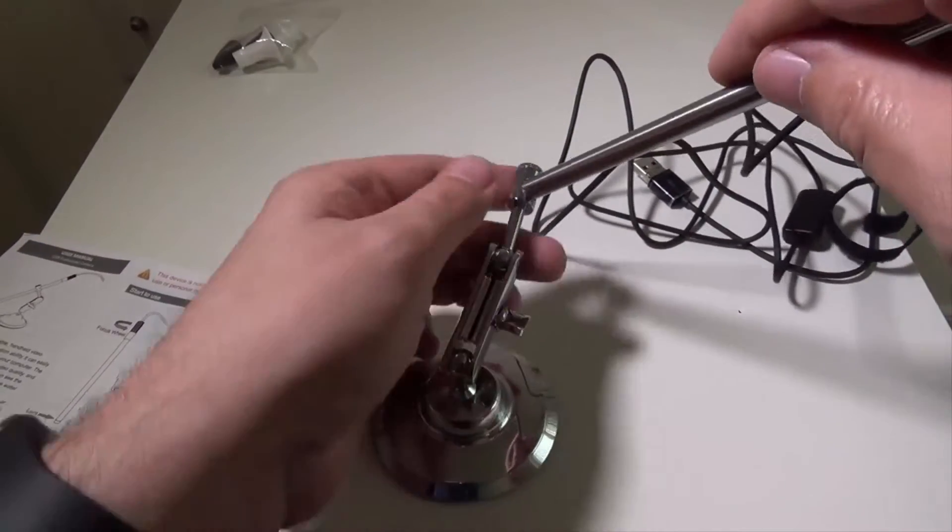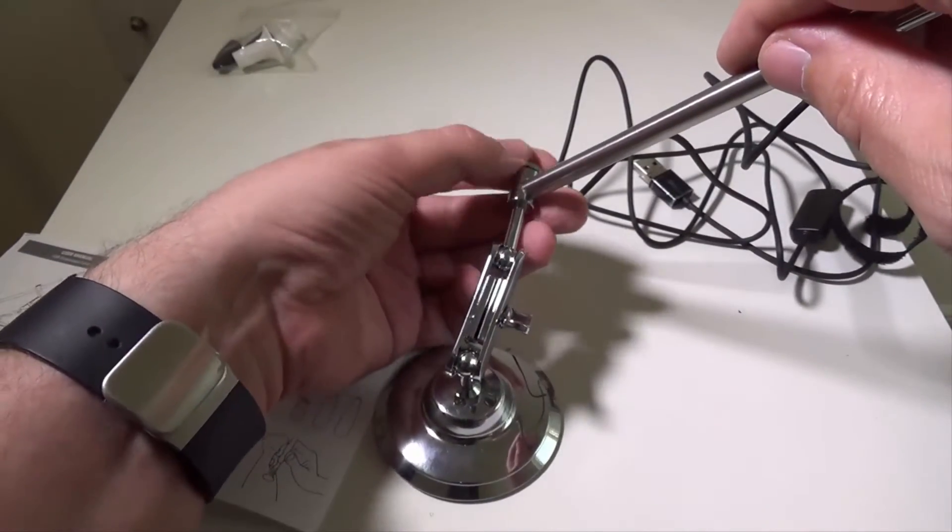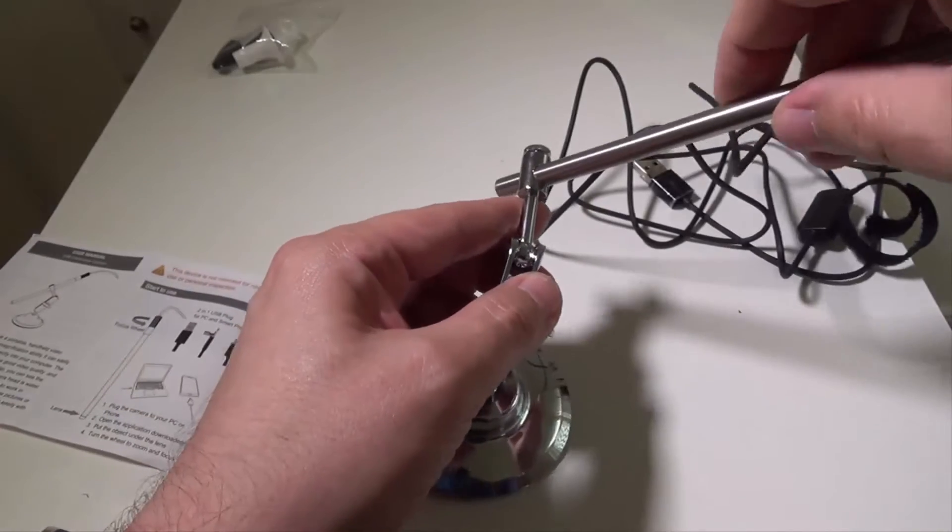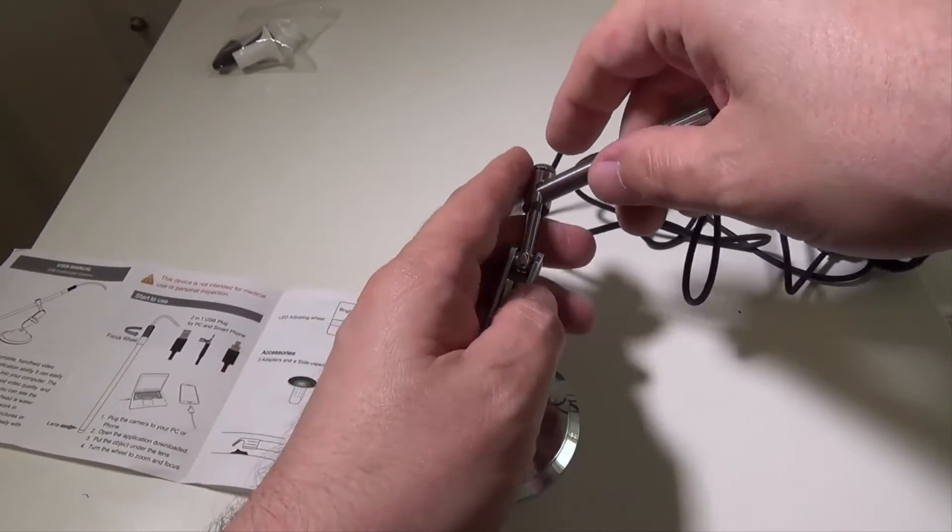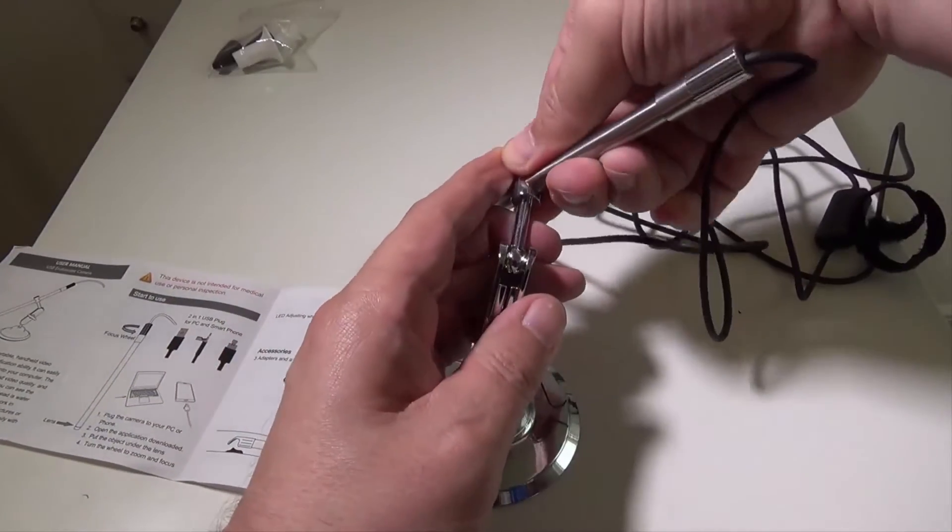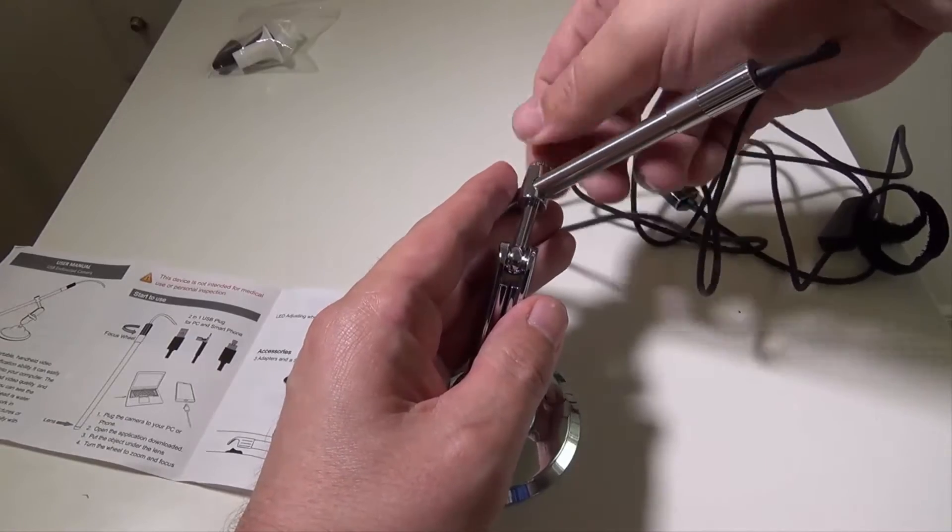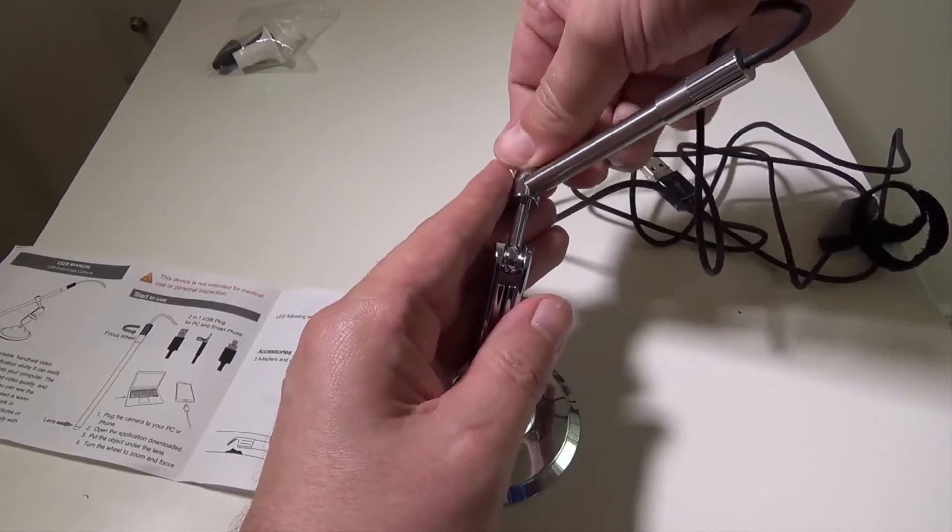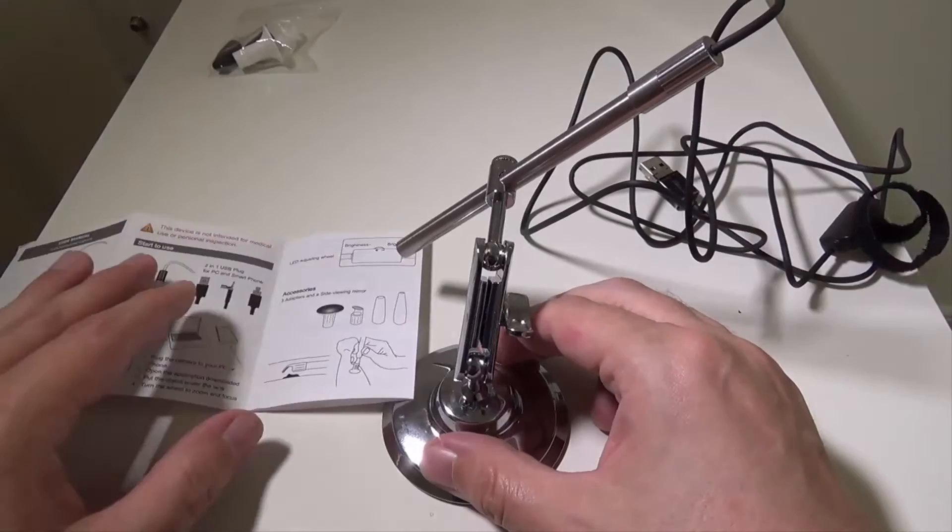So now if we want to thread this through, there's a little spot to unhook that there and then what we'll do is we'll get it so that it's fairly close to something that we want to take a picture of like maybe the manual itself and show you how far down we can get on that.